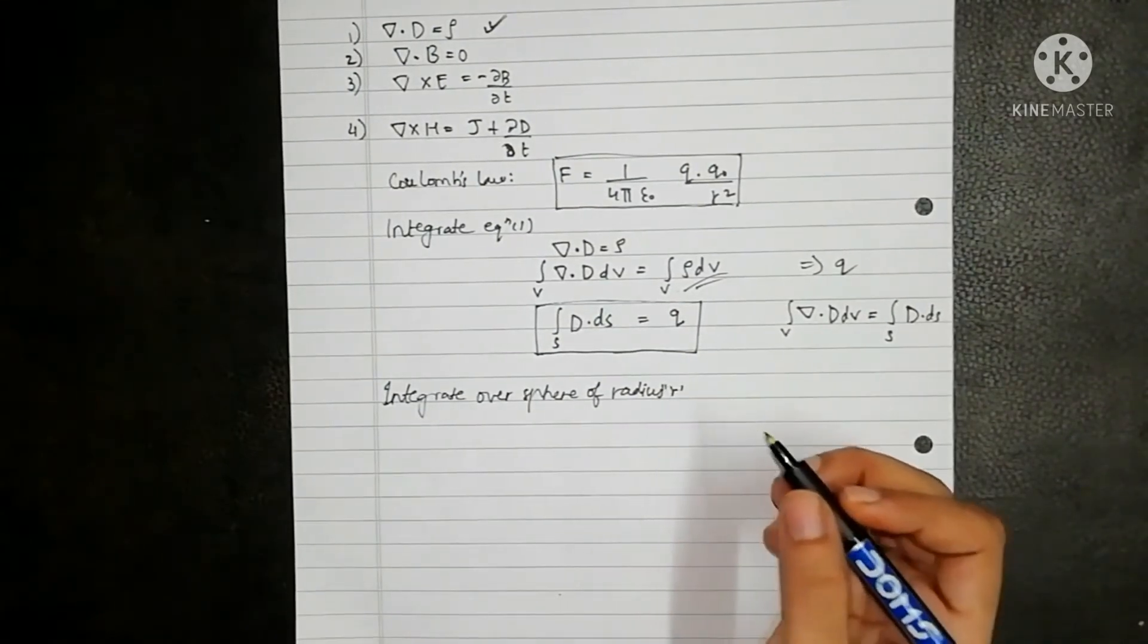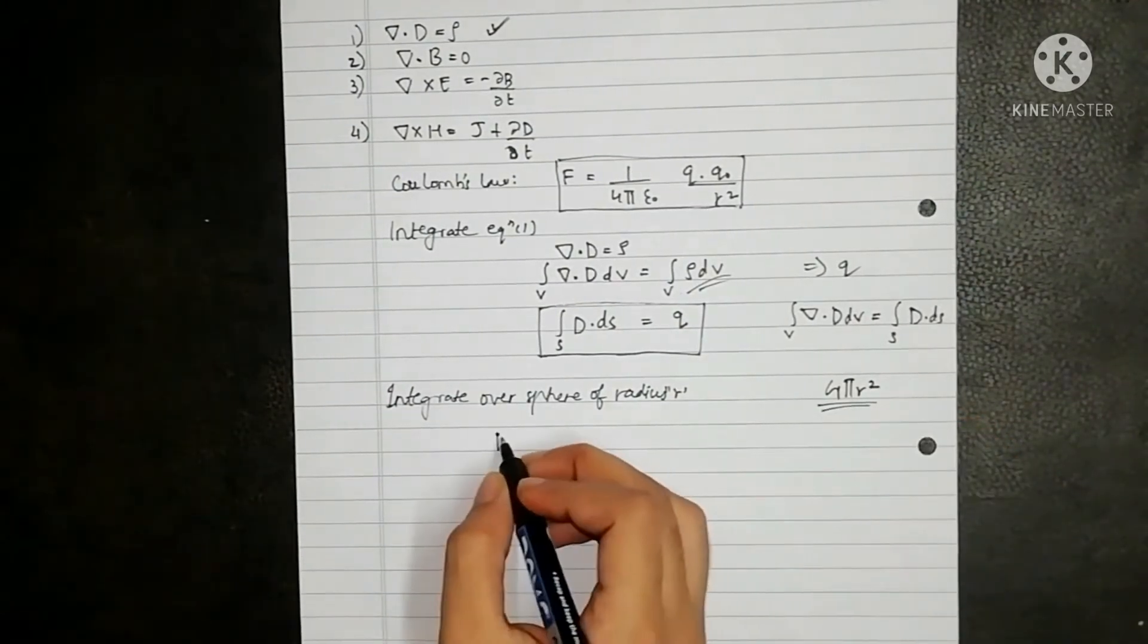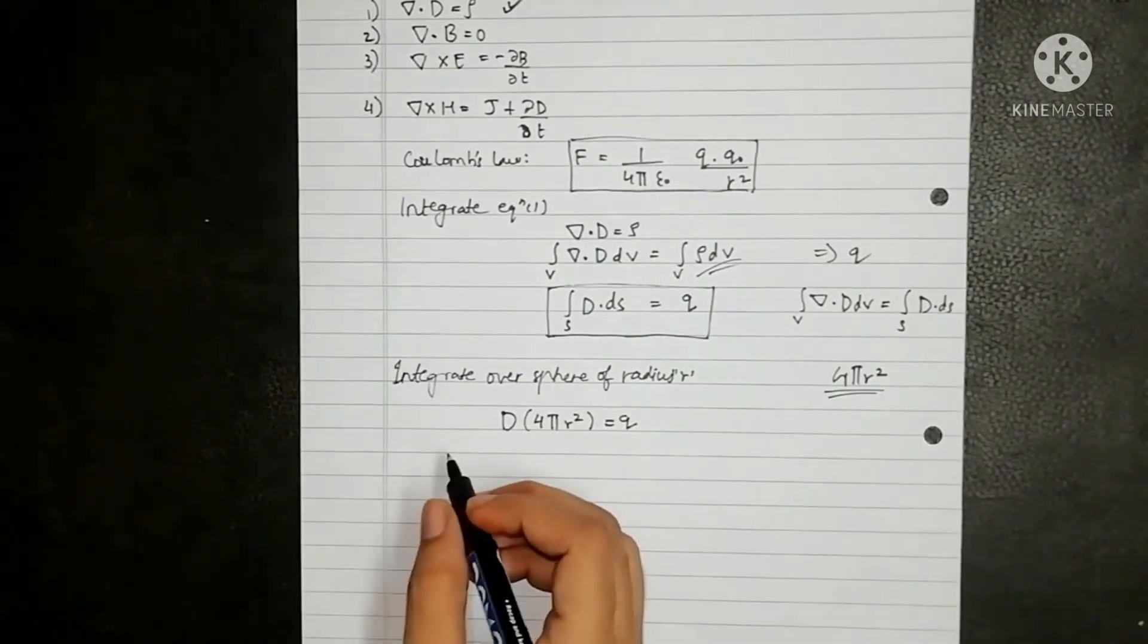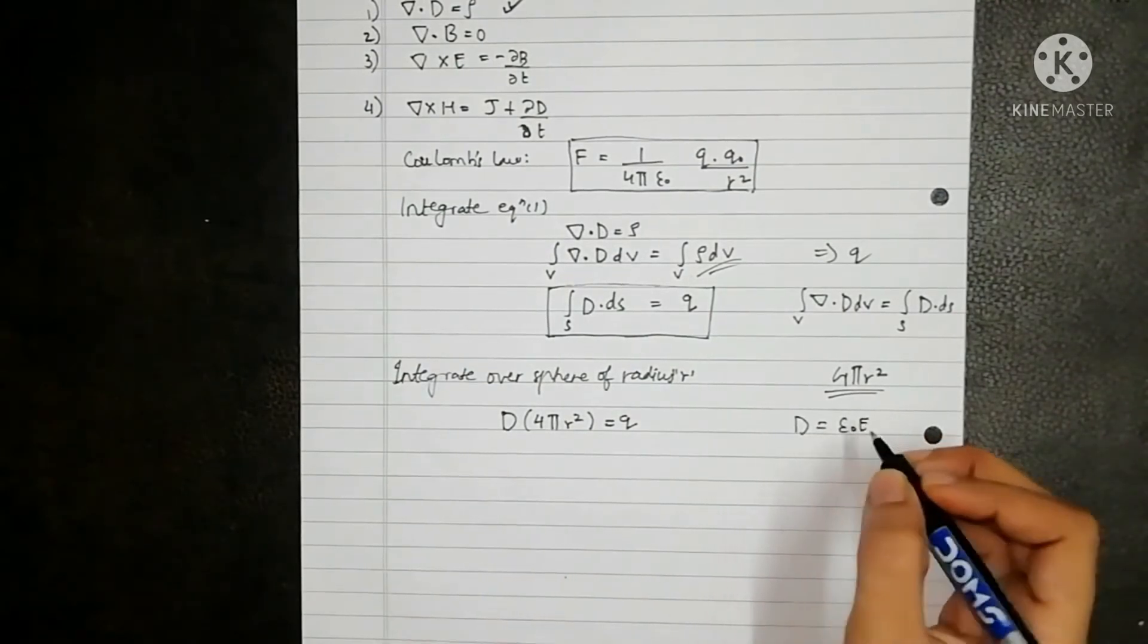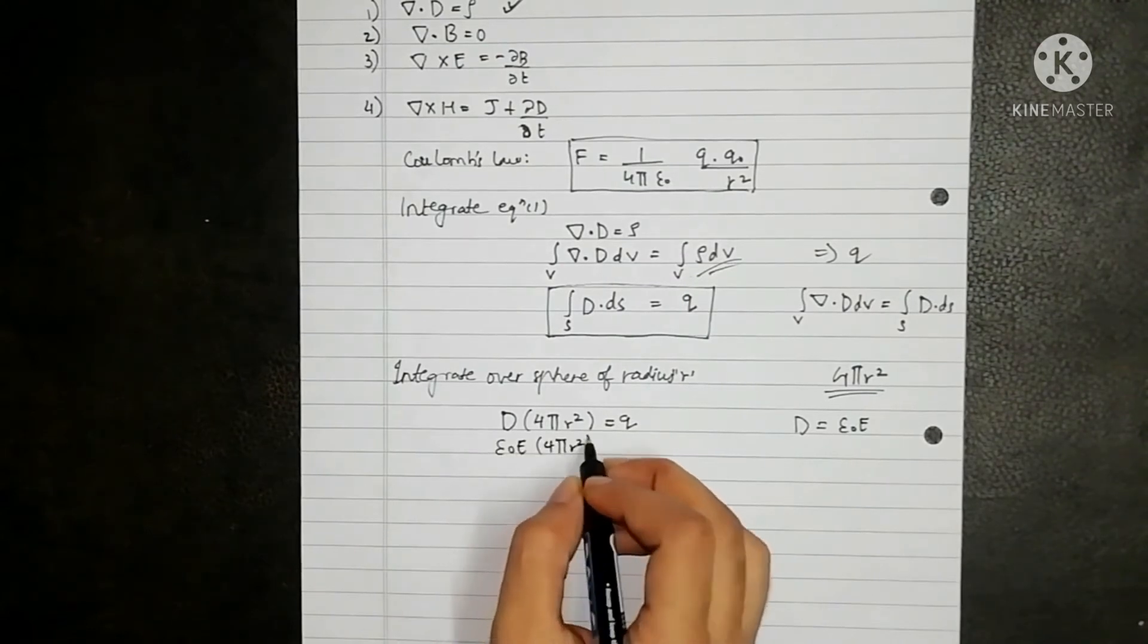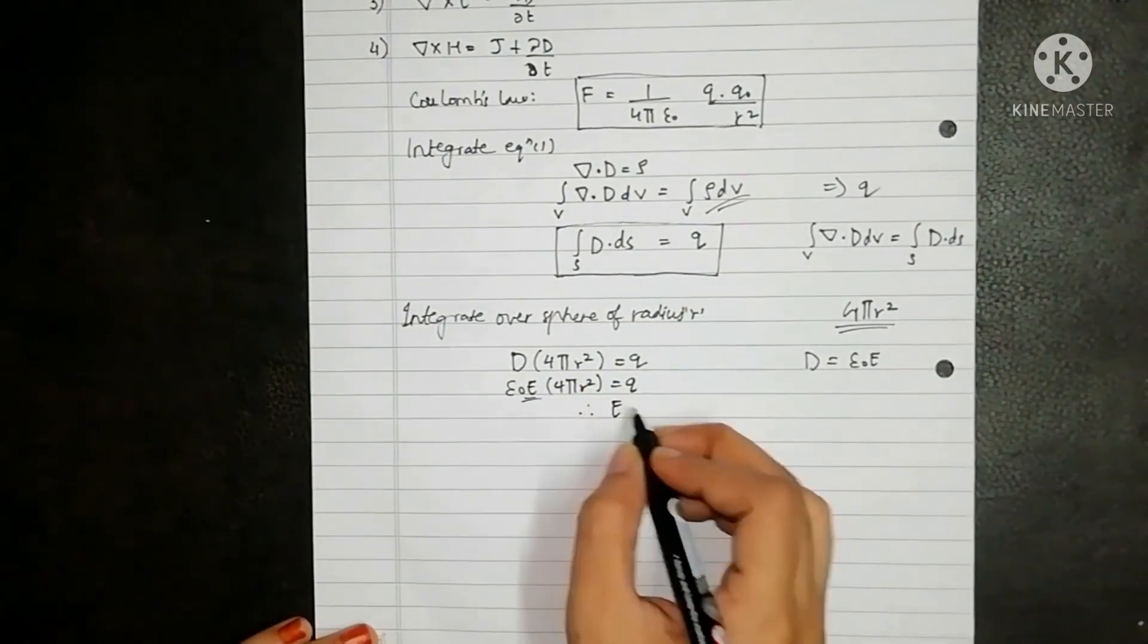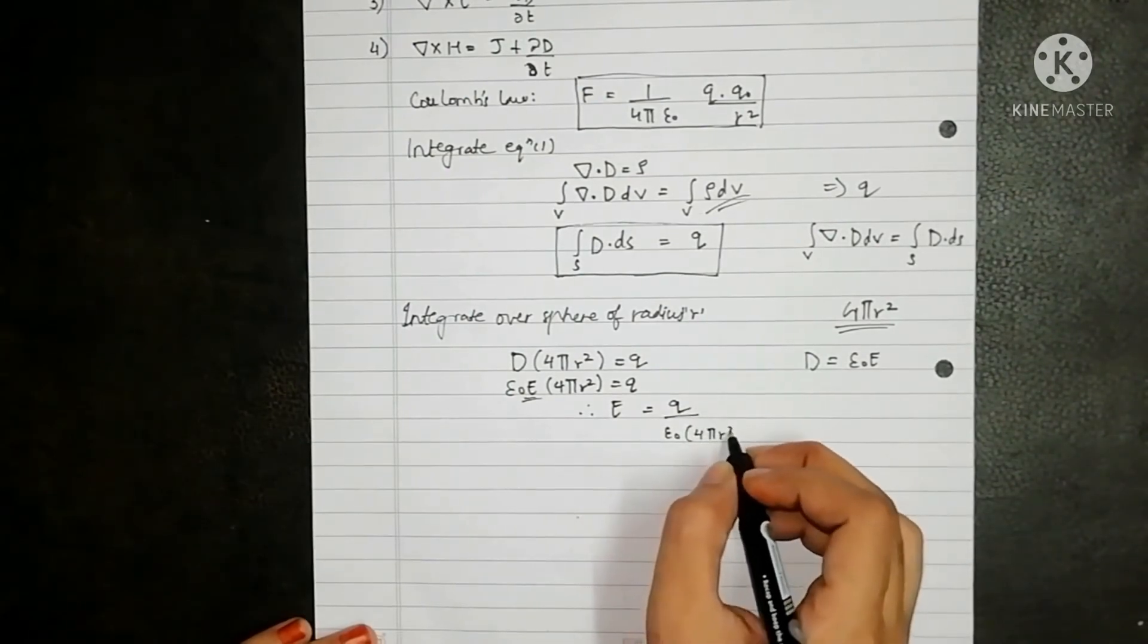So my surface area of sphere is 4 pi r square, so the equation will become D into 4 pi r square equals to Q. Now D is given as epsilon naught E, so epsilon naught E into 4 pi r square equals to Q. Therefore my value of E will be Q upon epsilon naught into 4 pi r square.